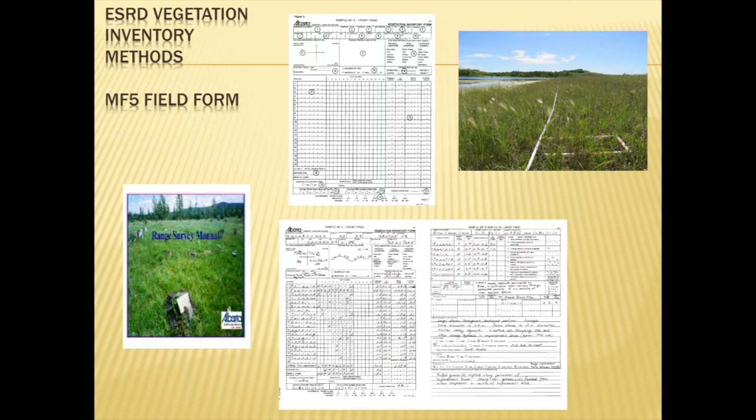Classification tools have been developed by the department — I think I'm on my fifth departmental name now in my career — environment and sustainable resource development. When I say lands and forests, everybody knows what I'm talking about. Because we've had a standardized vegetation inventory protocol for many decades, we have collected a great deal of information. The standard methodology is captured in the range survey manual, which is available on our website.